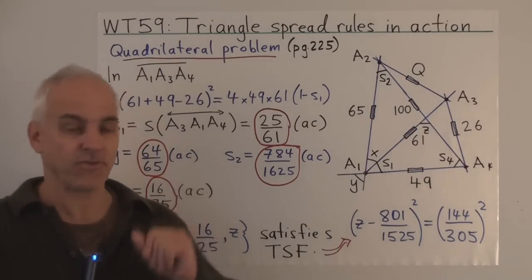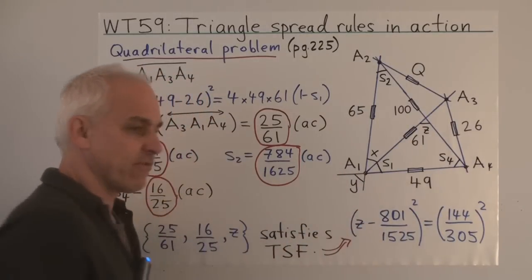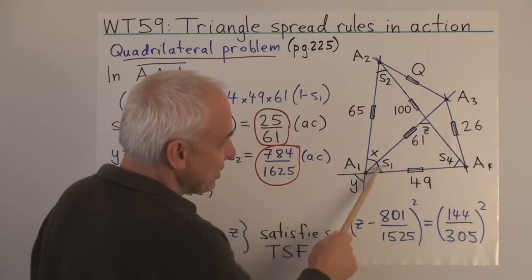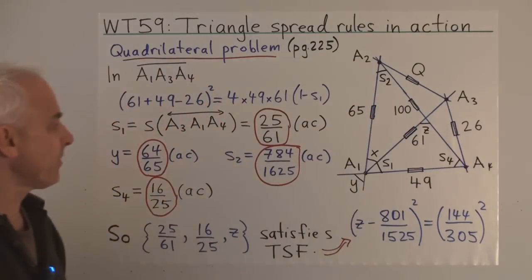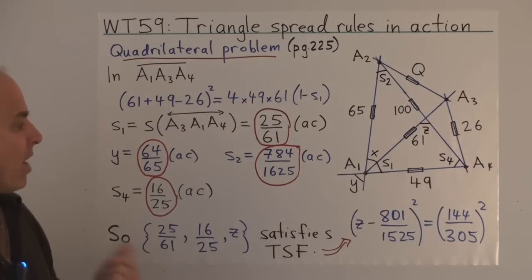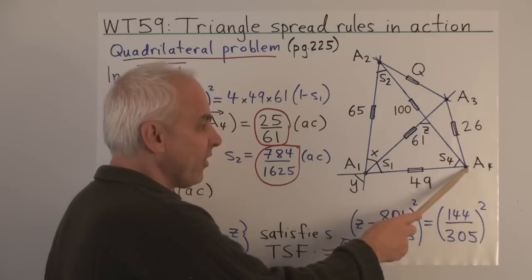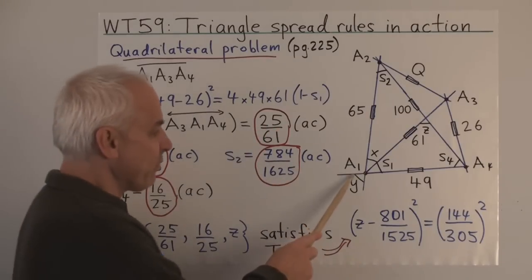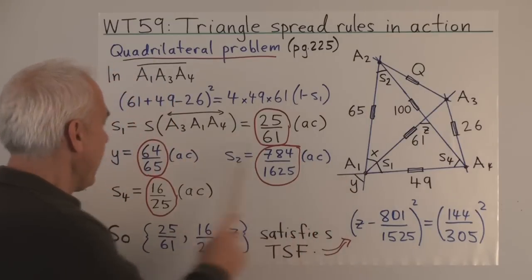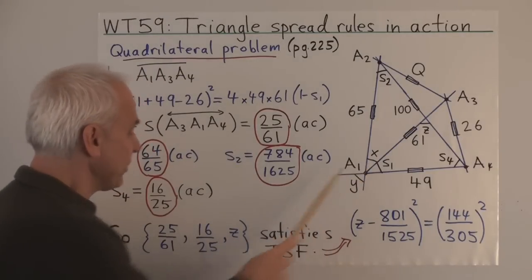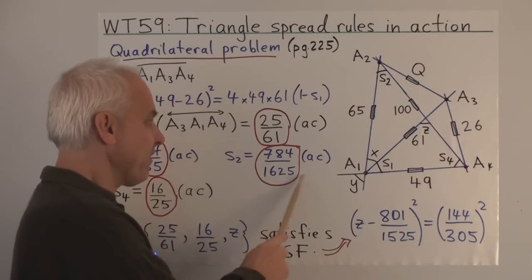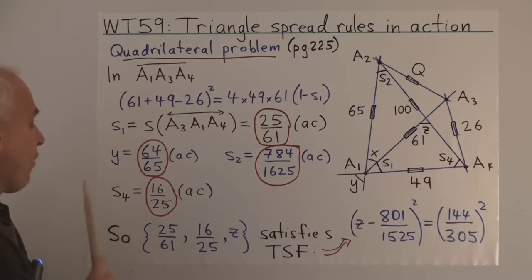Now we're going to use notation involving sectors. A triangle like this determines at each vertex a sector — the two lines meeting there divide the plane into four regions, and the region contained between the two lines in that direction is called a sector. This particular sector is acute because this quadrance plus this quadrance is bigger than 26 — that's our definition of when a spread is acute. Similarly, we can calculate the spread Y between the two lines, getting 64 over 65, which is also acute. The spread S2 is 784 divided by 1625, also acute, and S4 is 16 over 25, also acute.